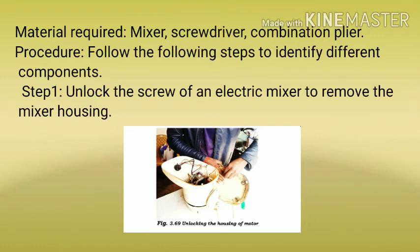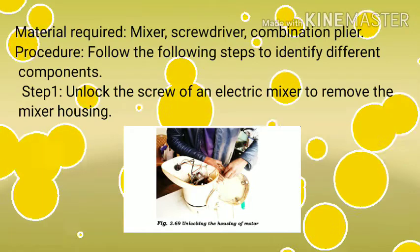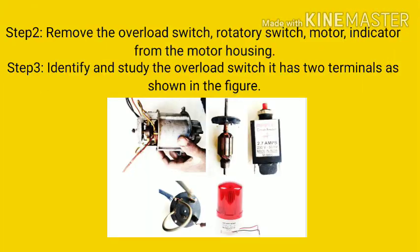Now the procedure. Follow the following steps to identify different components. Step 1: Unlock the screw of an electric mixer to remove the mixer housing. Step 2: Remove the overload switch, rotatory switch, motor, and indicator from the motor housing.